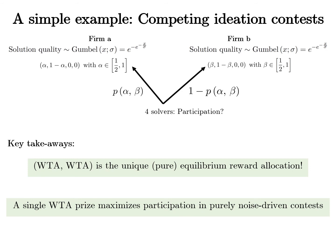There are no other symmetric or asymmetric pure equilibria. We do not restrict firms to choose the same allocation, but it turns out that in equilibrium no firm has incentives to differentiate from its competitor. That is the first conclusion from this simple example.